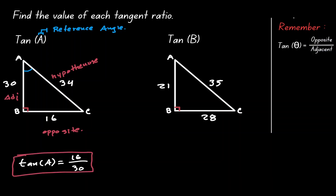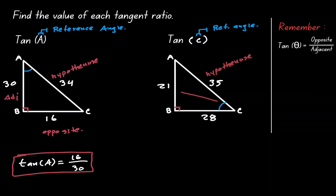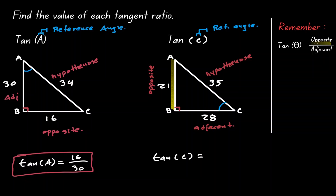In our second example — that is a typo, let's change it to tangent of C. We want to consider C to be our reference angle. Opposite of 90 degrees — that's the hypotenuse. Opposite of our reference angle — that is the opposite side. The side next to our reference angle — that is our adjacent. Remember, the tangent is opposite over adjacent. In this example, our opposite has a length of 21 and our adjacent has a length of 28.